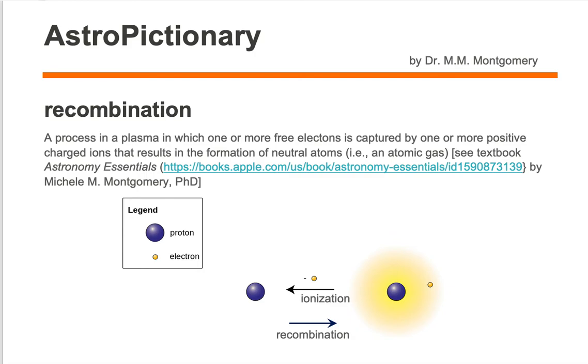Recombination is a process in a plasma in which one or more free electrons is captured by one or more positively charged ions, resulting in the formation of neutral atoms, i.e., an atomic gas.